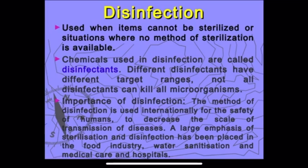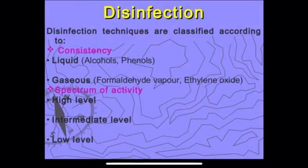Disinfection is used when items cannot be sterilized or when sterilization is not available — for example, a thermometer cannot be put in an autoclave, so we disinfect it instead. Different disinfectants have different targets; not all disinfectants can kill all microorganisms.